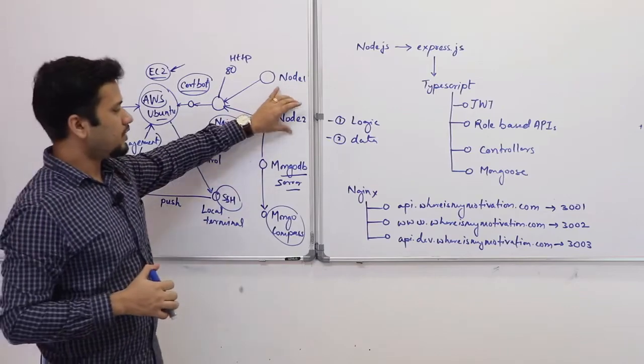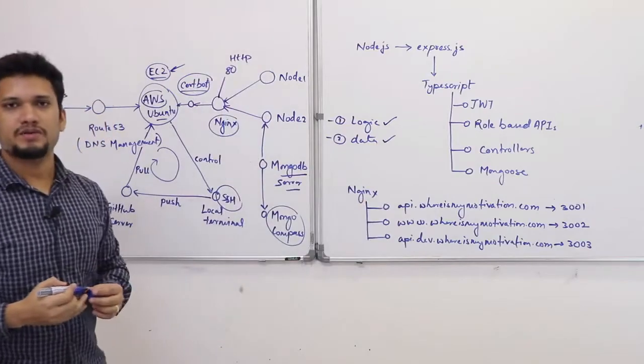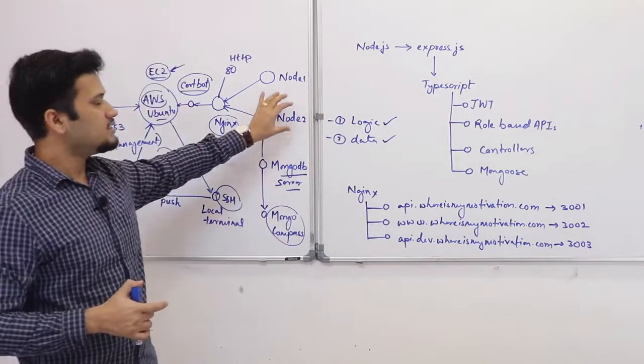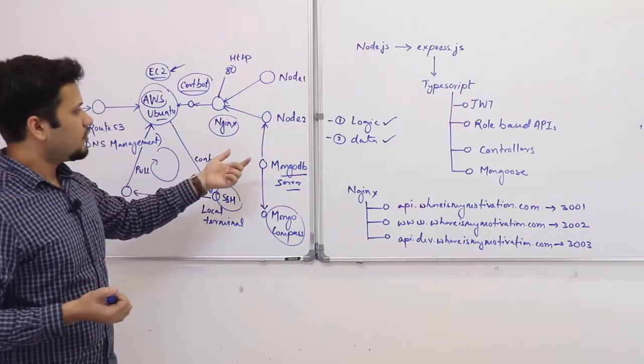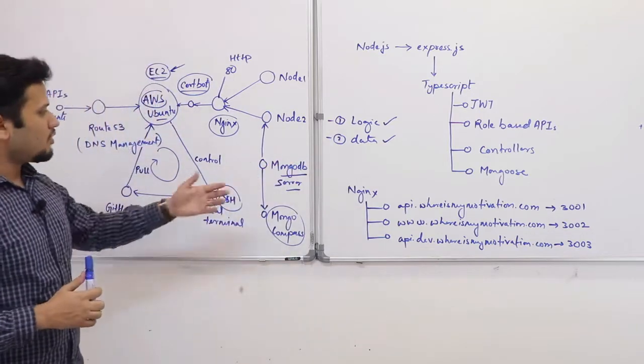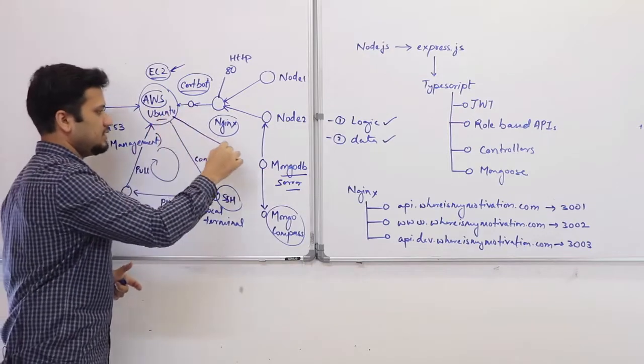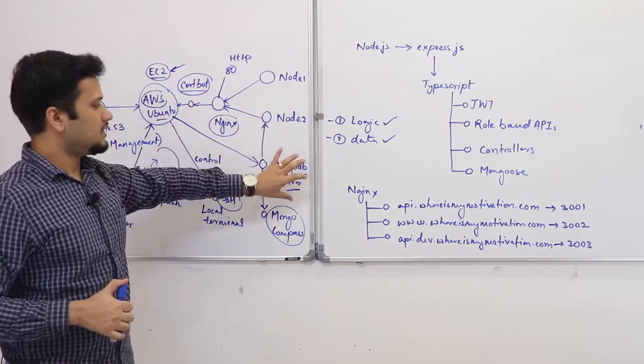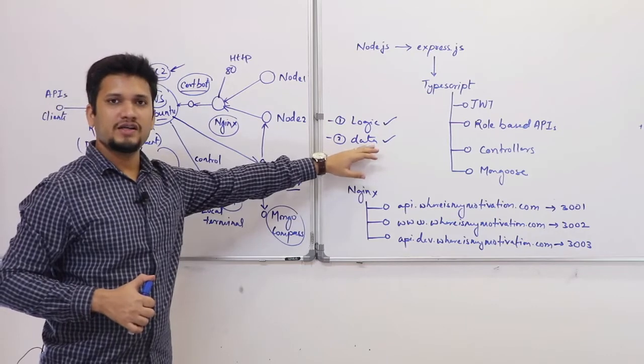So, I have got my node server running - it has got my logic for my application. And NGX is a proxy server where all the requests first come to the NGX and then it is redirected to the actual server program. Now, this node program has two things: your logic and the data that you have persisted. For the logic you have got scripts in JavaScript - I have used TypeScript. For the data persistence I am using MongoDB. So, MongoDB server I am running on the same machine, and node locally connects to the MongoDB server and communicates for any data exchange.